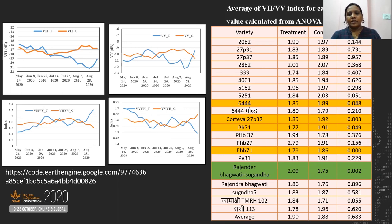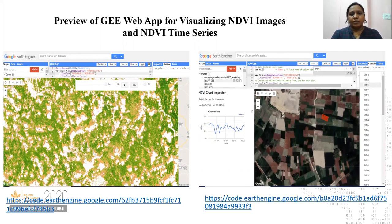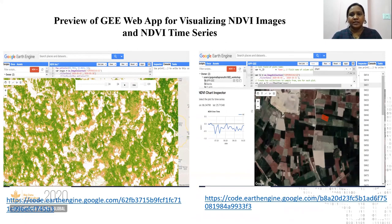The five varieties showing significant differences were 6444, Corteva PH71, PHB71, Rajendra Bhagwati, and Suganda. For Rajendra Bhagwati specifically, the VH/VV index is higher in treatment and lesser in the control plot. We have also developed a web app. On the left-hand side you can see 24 images from June to the end of September, which can be viewed with a time lapse of 3 seconds. On the right-hand side, there is a drop-down of the plots, and when you click on a plot you can see a time series of vegetation indices for that particular plot.